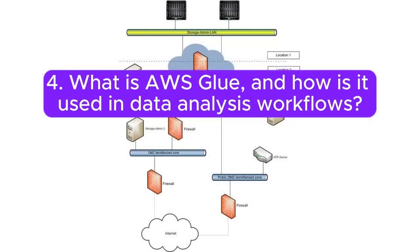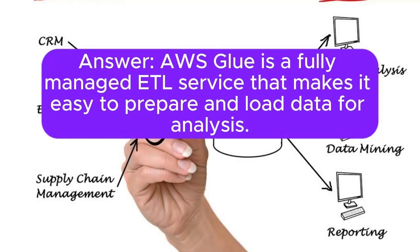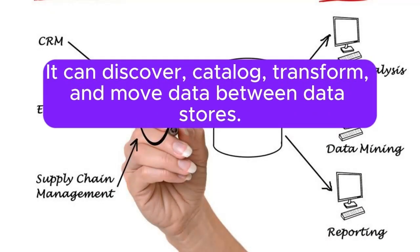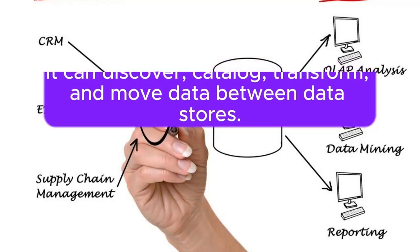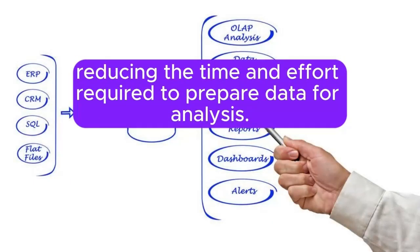4. What is AWS Glue and how is it used in data analysis workflows? Answer: AWS Glue is a fully managed ETL service that makes it easy to prepare and load data for analysis. It can discover, catalog, transform, and move data between data stores. In data analysis workflows, Glue is often used to automate the ETL process, reducing the time and effort required to prepare data for analysis.